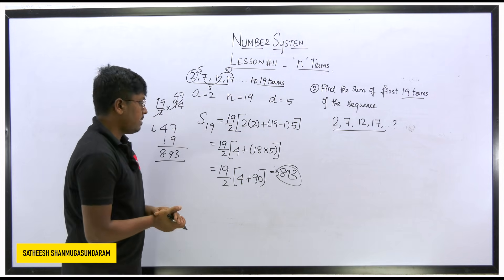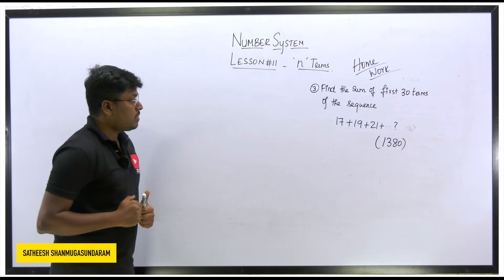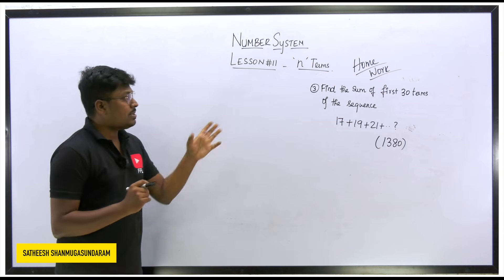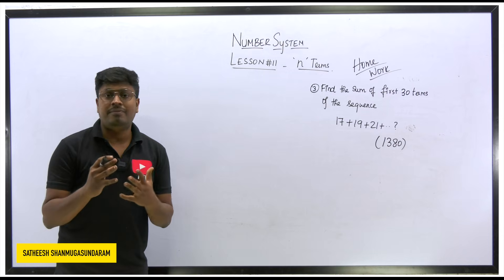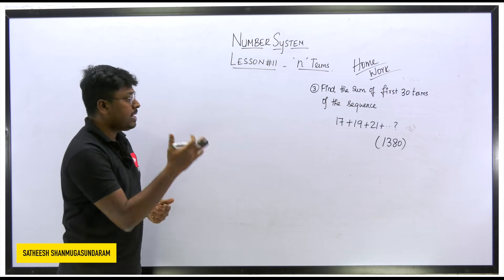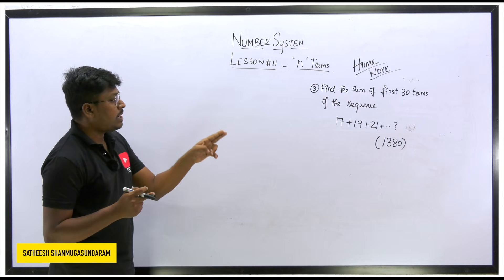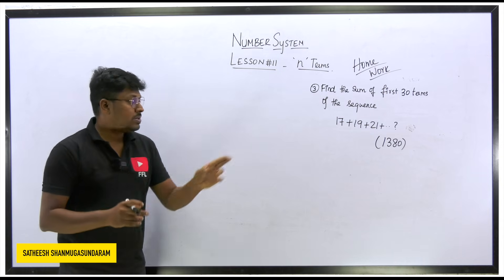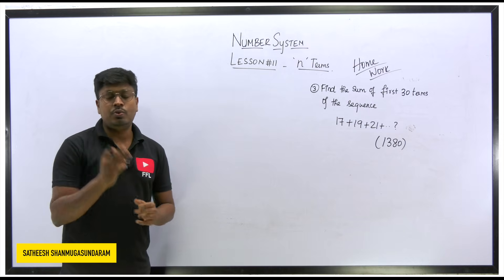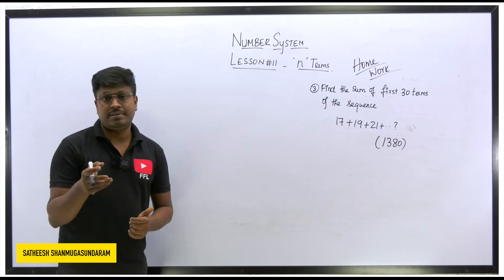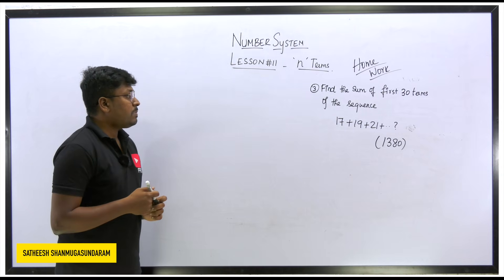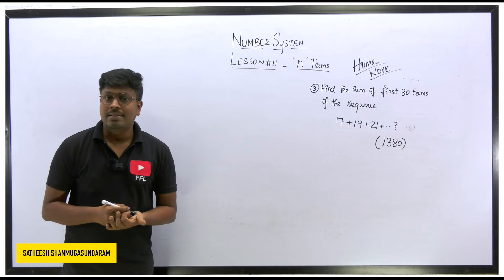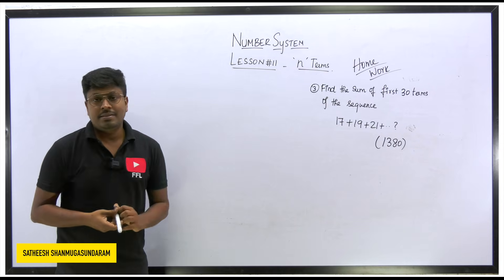The answer for Question 2 is 893. Now here's a practice question — take it as a memory-based exam question. Find the sum of the first 30 terms for the sequence 17, 19, 21... The starting value a = 17, the common difference d = 2 (since 19−17 = 2), and n = 30 terms. Substitute these values into the AP formula and you should get the answer 1380. Solve it and check whether you're getting the correct answer.